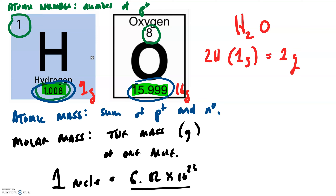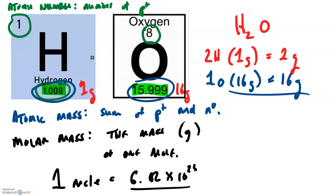A mole of oxygen is 16 grams. In a molecule of water you have one oxygen, which has a mass of 16 grams. So if you wanted to find the mass of water molecules, you get 2 grams from the hydrogen and 16 grams from the oxygen — 18 grams is the mass of one mole of water.